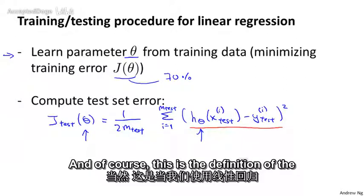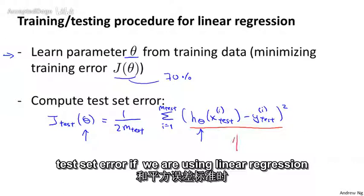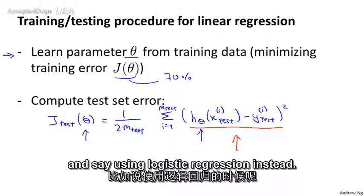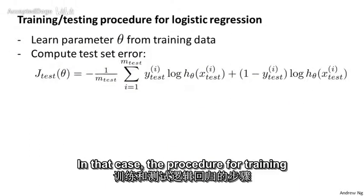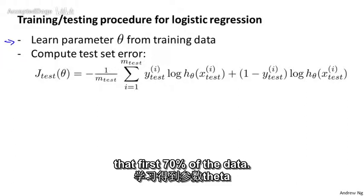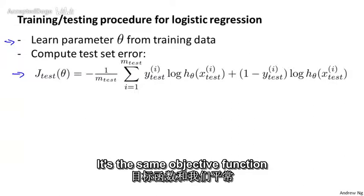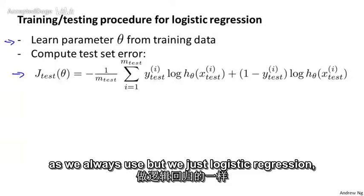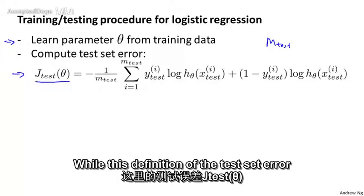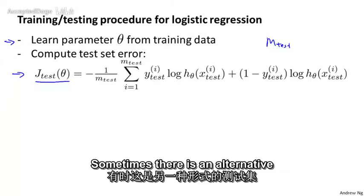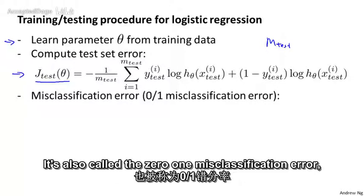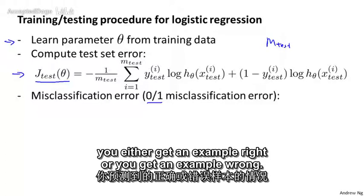This is the definition of the test set error when using linear regression and the squared error metric. For a classification problem using logistic regression, the procedure is pretty similar. First, we learn the parameters from the training data, that first 70% of the data, and then we compute the test error using the same objective function as always for logistic regression, except defined using our m subscript test examples. While this definition of J subscript test is perfectly reasonable, sometimes there's an alternative test set metric that might be easier to interpret, and that's the misclassification error, also called the 0/1 misclassification error, with 0/1 denoting that you either get an example right or you get an example wrong.